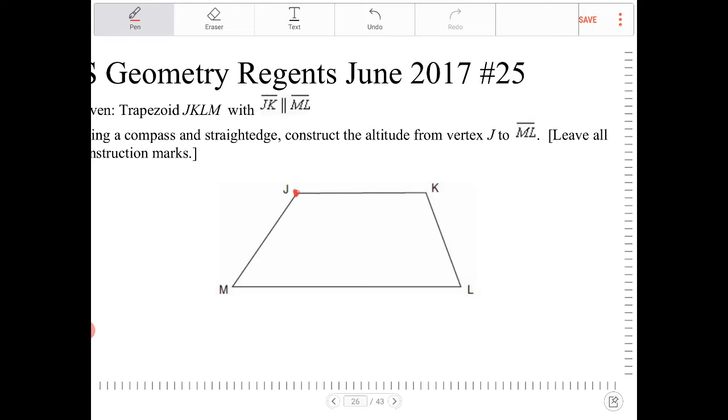So how are we going to do that? You're going to take your compass, place your pin on point J, the red dot that I have there. You're going to open up the compass so that the lead is on point M. And then you're going to draw an arc like so.